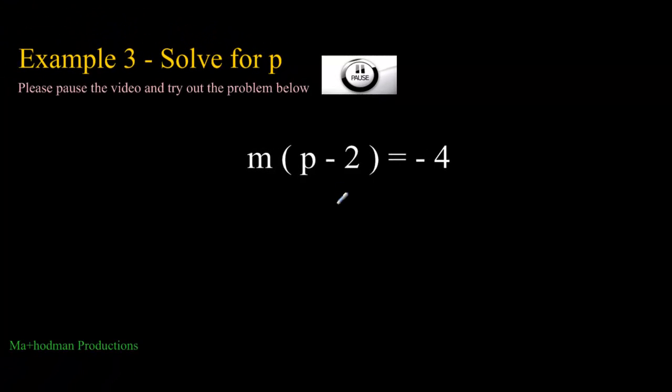Example 3, solve for p. You want to have p all by itself, and a little hint before you try this problem on your own. You cannot get rid of negative 2 as your first move. Please pause the video and try out the problem below. When you have finished, check your answers, and maybe you'll get a little lucky and get it right. I'm just kidding. I'm pretty sure you will.